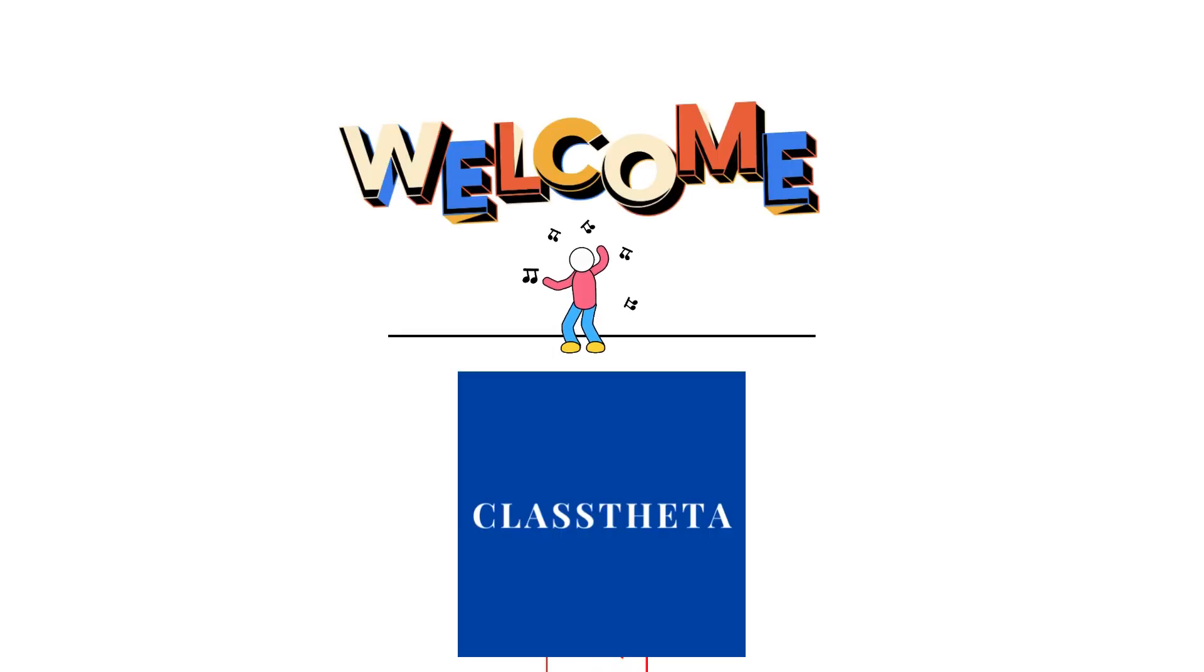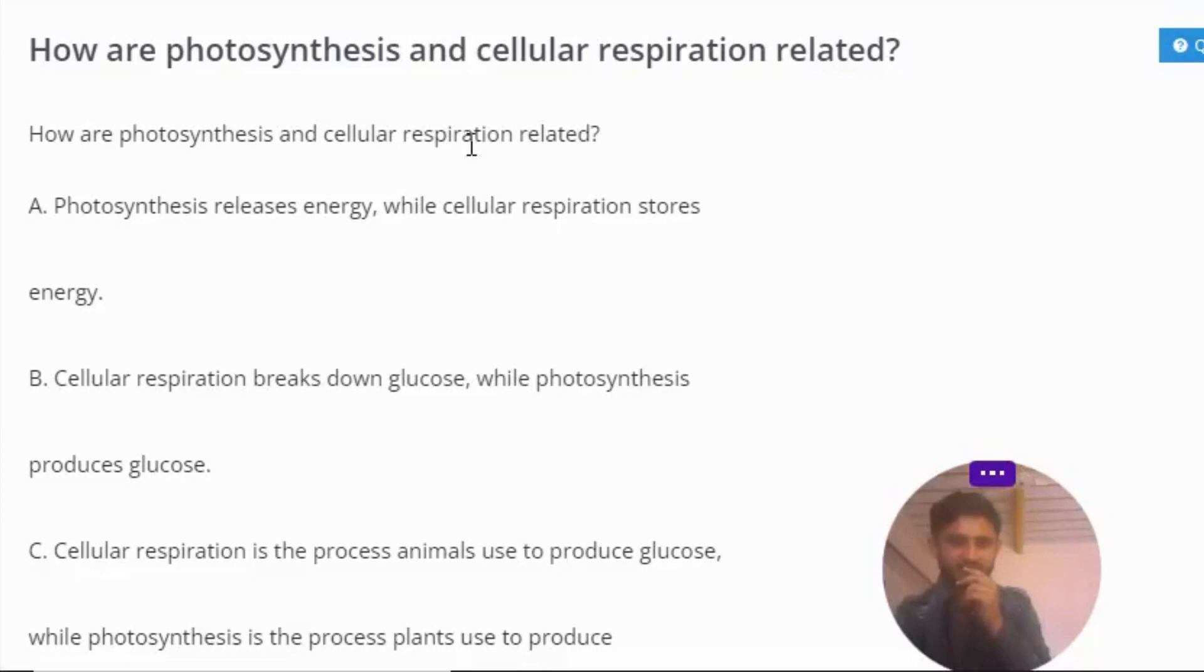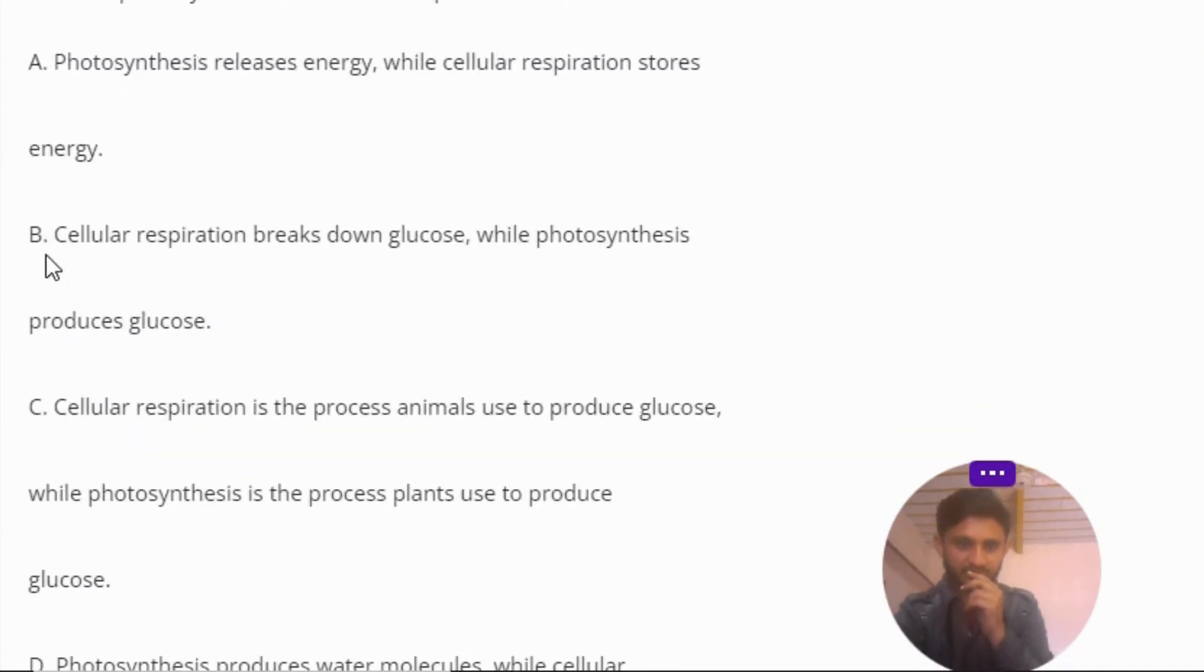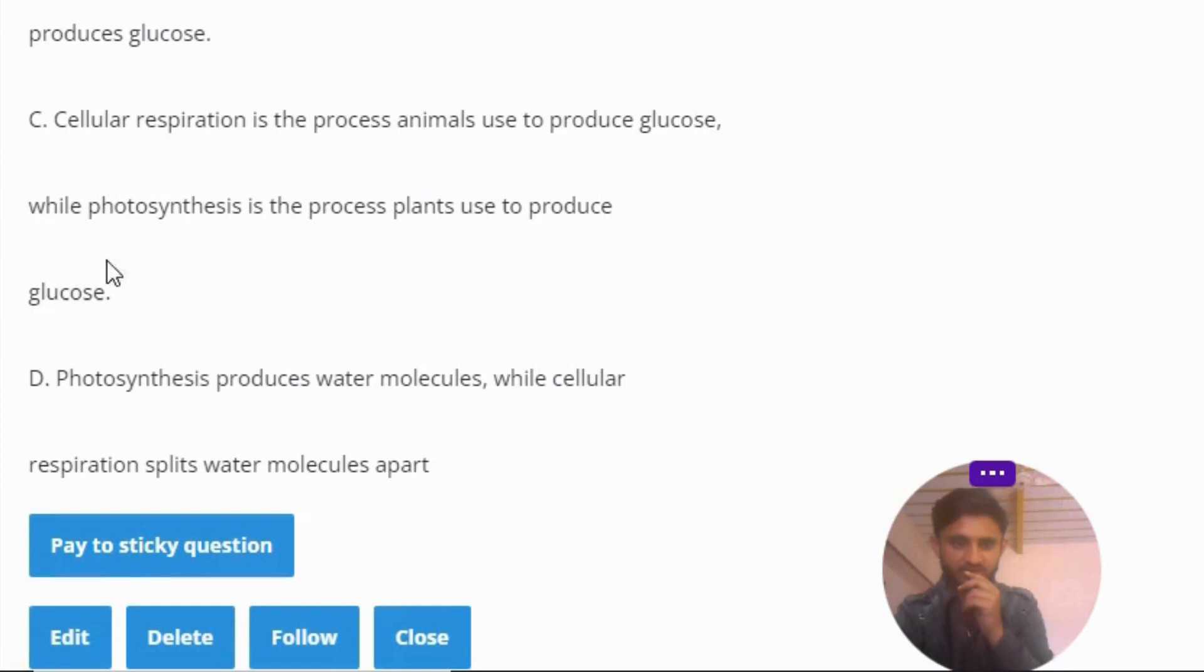So our today's question is: How are photosynthesis and cellular respiration related? A. Photosynthesis releases energy while cellular respiration stores energy. B. Cellular respiration breaks down glucose while photosynthesis produces glucose. C. Cellular respiration is the process animals use to produce glucose while photosynthesis is the process plants use to produce glucose.